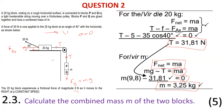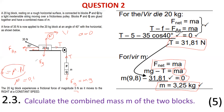If friction force is not given, you must use Newton's first law with normal force to find it. Use the coefficient of friction: friction force equals mu times normal force, then proceed the same way. In this question friction was given, so we were lucky. Question 2.3 is done.